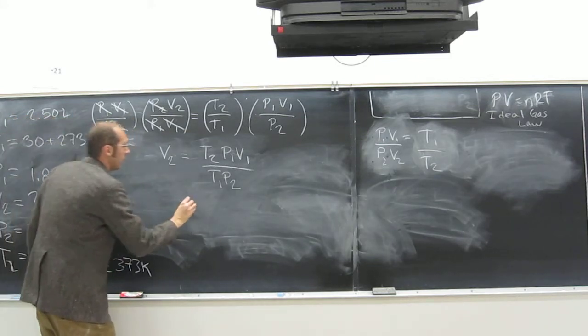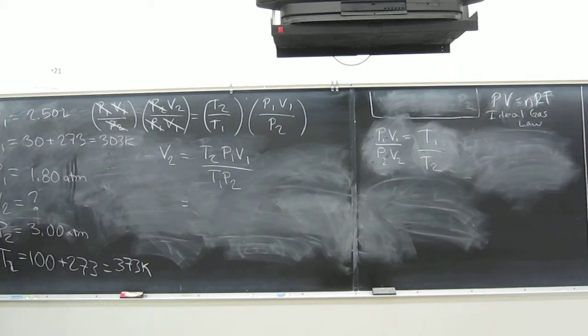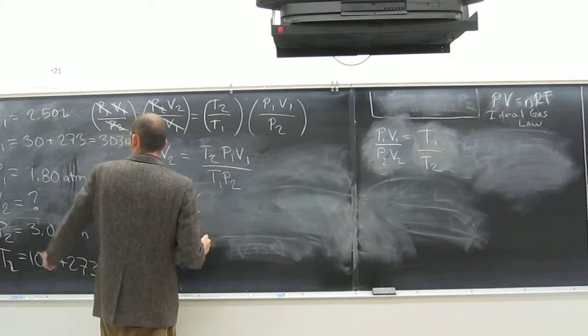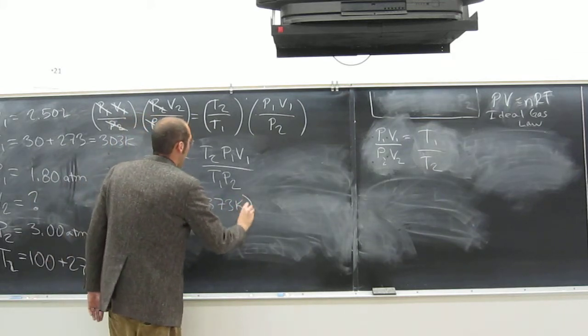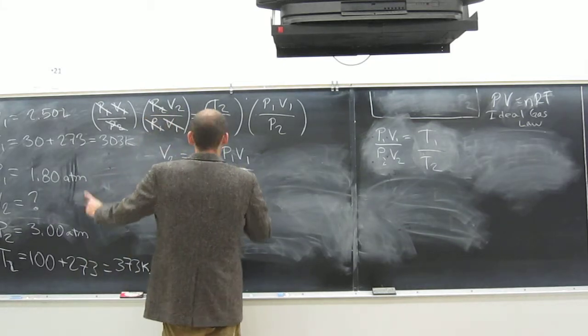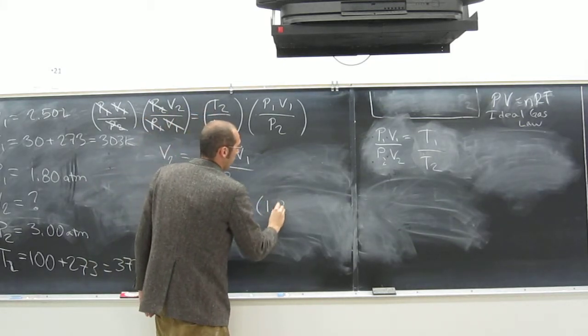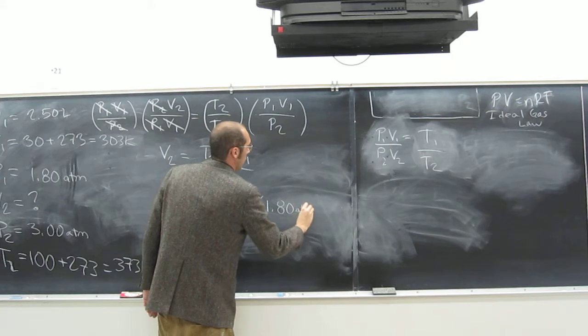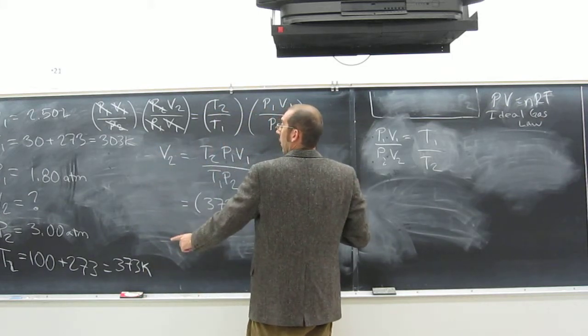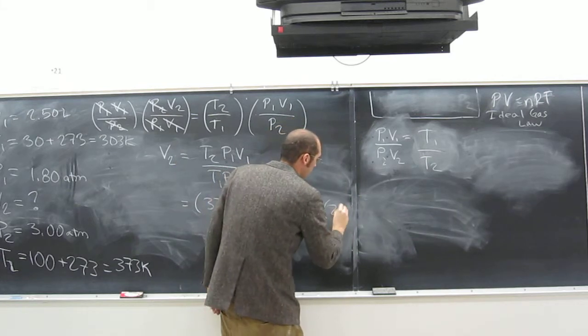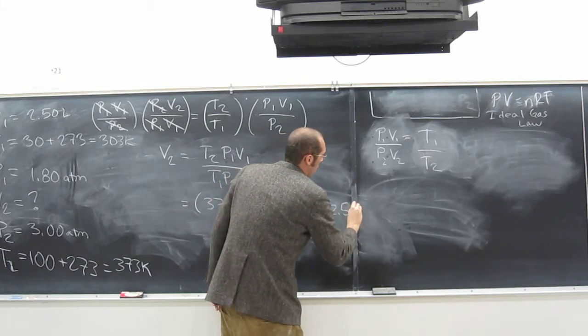So now what do we do? Just do it. Plug it in. T2 is going to be 373 Kelvin, P1 1.80 ATM, V1, where is it, 2.50 liters? So I'm going to make sure. And let's do it.